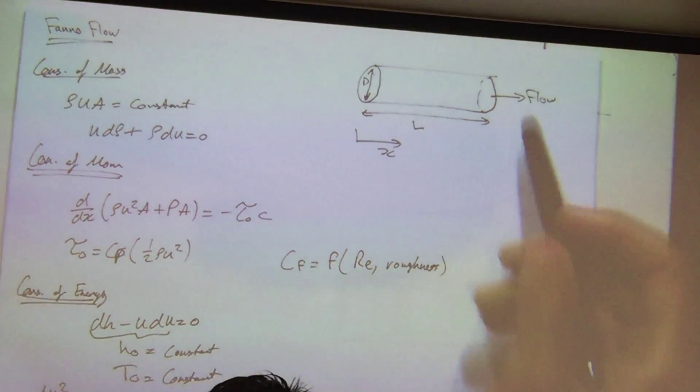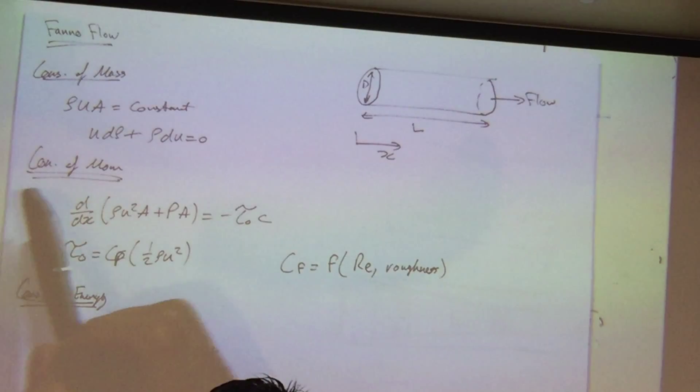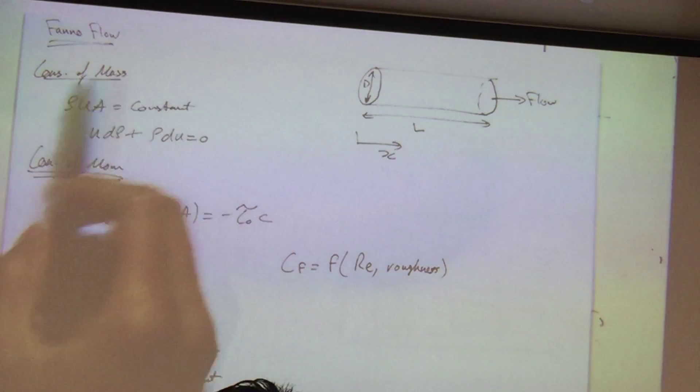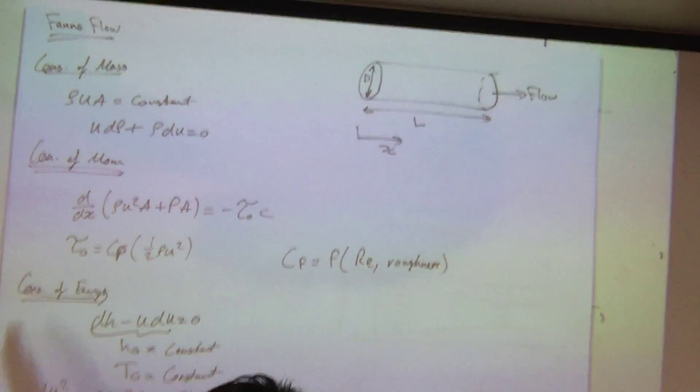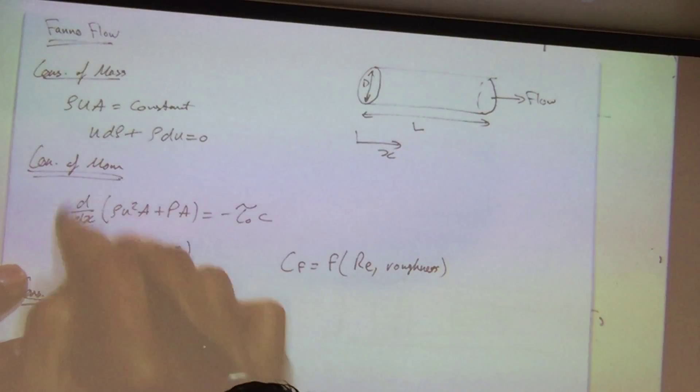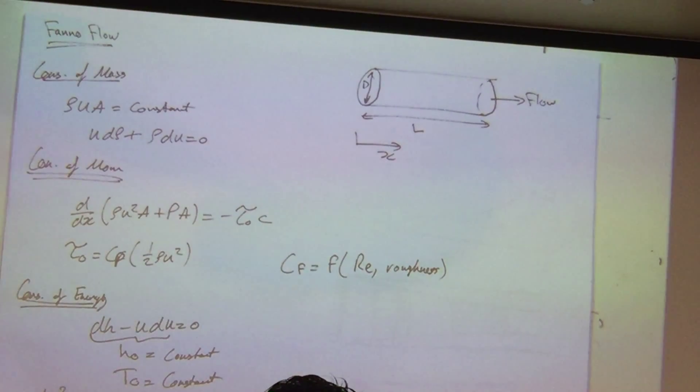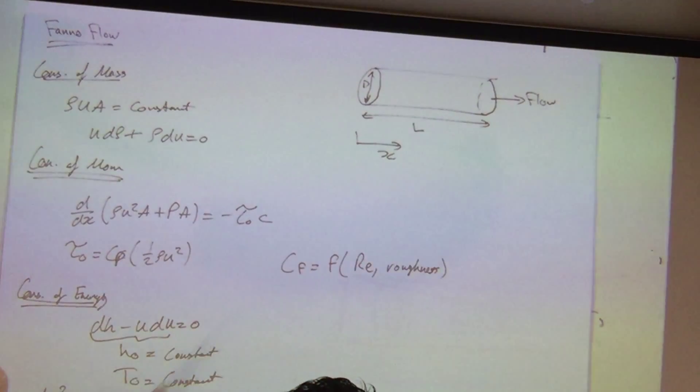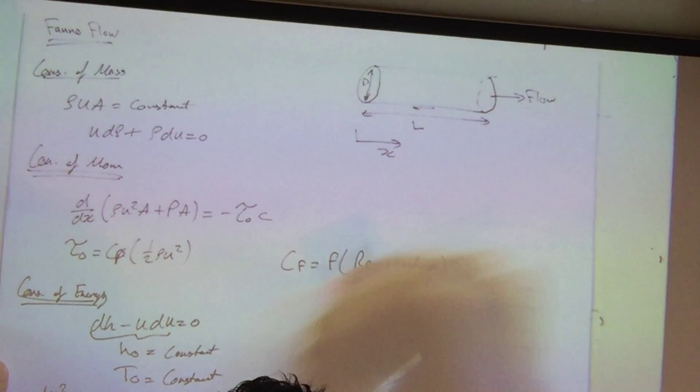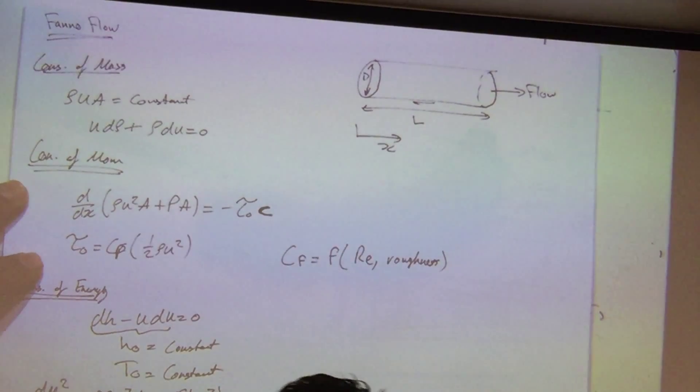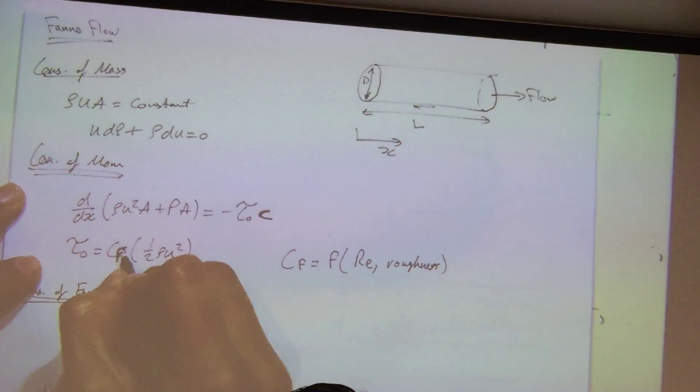Okay, so Fanno flow, we have a duct with some friction on it, with some length and some diameter to it. We apply conservation of mass, mass is conserved, and for example, we got our flow momentum, our surface area forces equals to my shear stress forces that are being applied to the walls here. Primarily I've got shear stress that's being applied to the duct here. And this coefficient C that we assigned earlier in our momentum equation ends up being our friction coefficient right here.